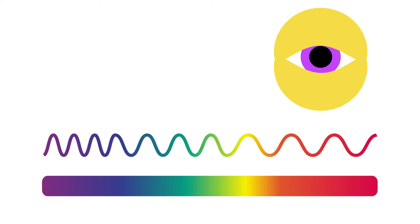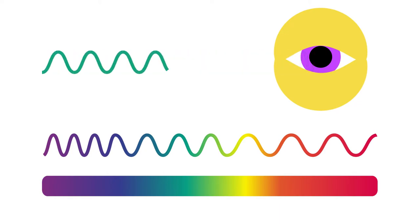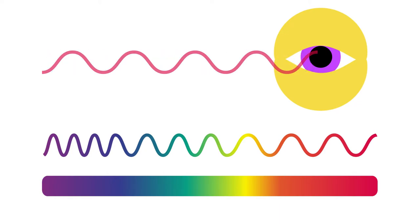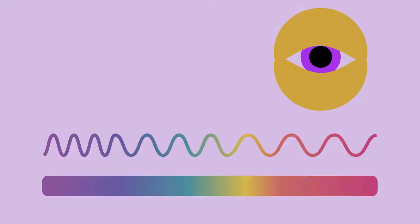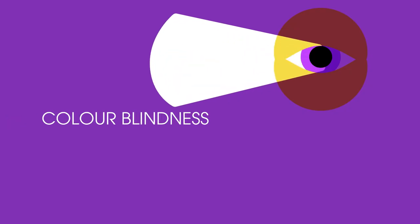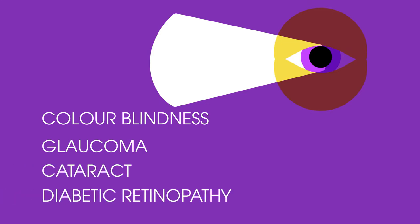The different wavelengths of visible light give rise to different colours when interpreted by our brain. This video will discuss four vision problems: colour blindness, glaucoma, cataract and diabetic retinopathy.